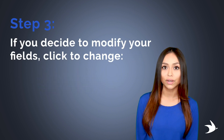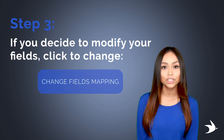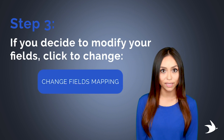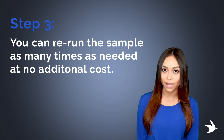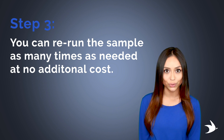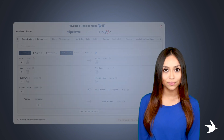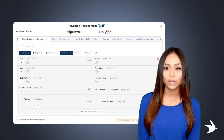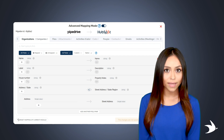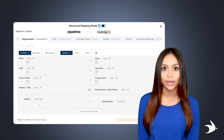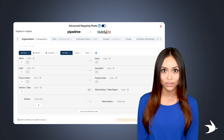If you decide to modify your fields, click Change Fields Mapping. You can rerun the sample as many times as needed at no additional cost. You will have the ability to choose what data you want to migrate before and after you generate sample results.